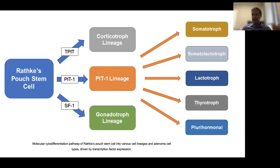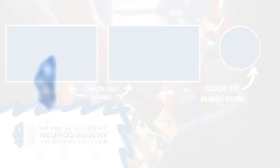Then we have the SF1 lineage, which encompasses the gonadotroph adenomas — these are the most benign of all the categories.